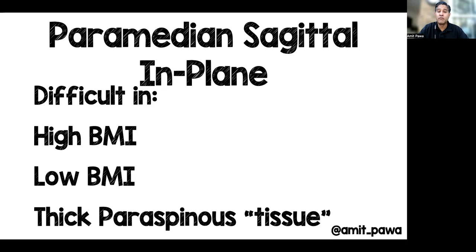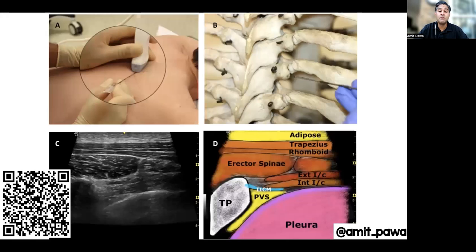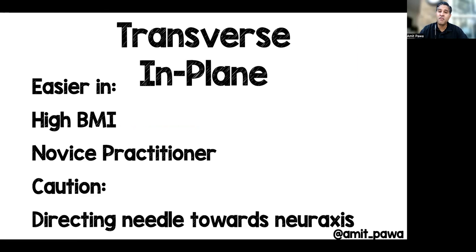With the transverse in-plane approach, the probe is orientated along the long axis of the rib and you come in from the lateral aspect — it's like an intercostal approach to the paravertebral space — aiming to traverse the internal intercostal membrane. I find this technique easier in patients with a larger body mass index, and most novice practitioners I've taught find this approach easier. The only caution is that it encourages you to drive your needle towards the central neural axis, so that requires careful attention.